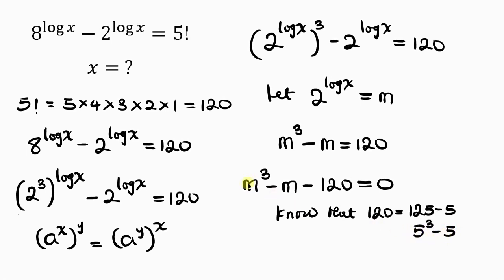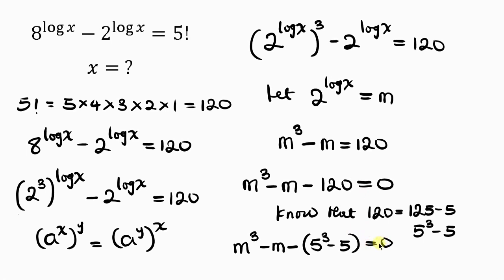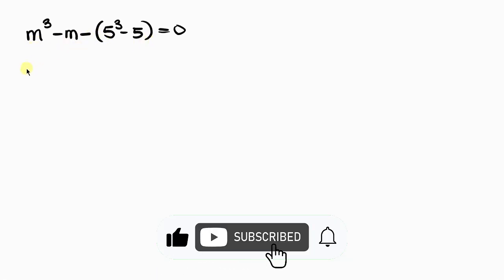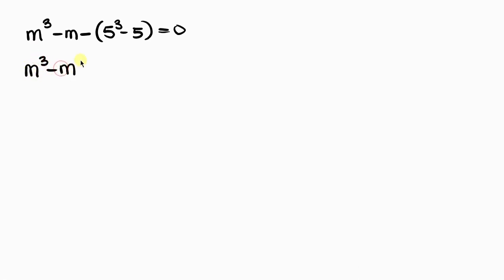Notice that we have m cubed and m, just like 5 cubed and 5, so by comparison m equals 5. We'll confirm this by substituting: m cubed minus m minus (5 cubed minus 5) equal to zero. Using the minus sign to open the brackets gives m cubed minus m minus 5 cubed plus 5 equal to zero.